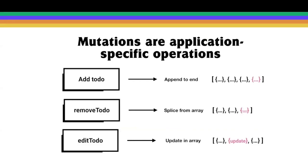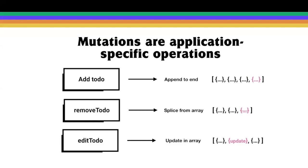This is actually a good thing. Mutations and deciding how cached collections should change are application-specific operations. To Apollo Client, all it knows is that a mutation was invoked — it doesn't know the specific behavior we'd like. Only we the developers know this. For example, an 'add to-do' operation adds to the end of a list, a 'remove to-do' splices the object from the array, and an 'edit to-do' updates it in place. This is a small price to pay for abstracting the entire data layer.